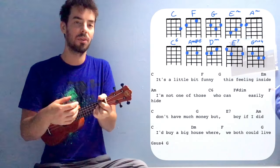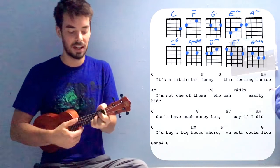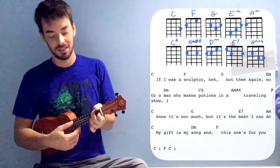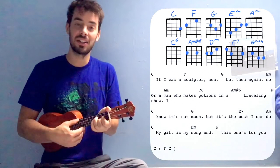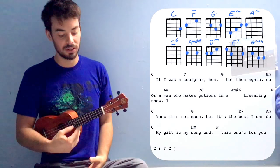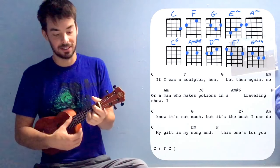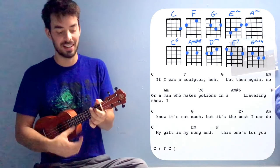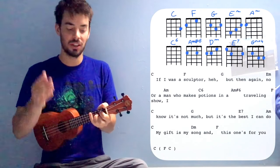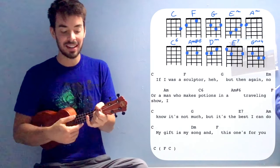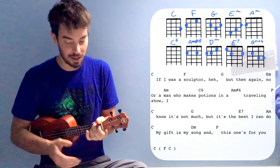We both could. And the G on the live. And then G sets for G. And then again. If I was a sculptor, F, G. But then again, no. Or a man who makes solutions in the... And then the A minor, sharp six.